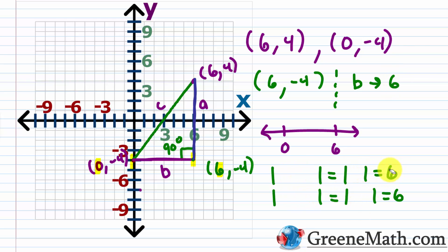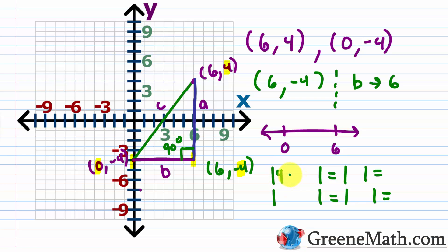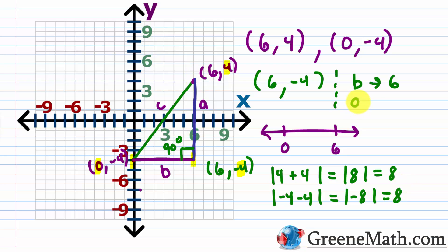For leg A, the vertical leg, we find the distance by subtracting y-values. The y-values are 4 and −4. We can do the absolute value of 4 minus (−4), which equals the absolute value of 8, which is 8. Or the absolute value of −4 minus 4 equals the absolute value of −8, also 8. So leg A equals 8.